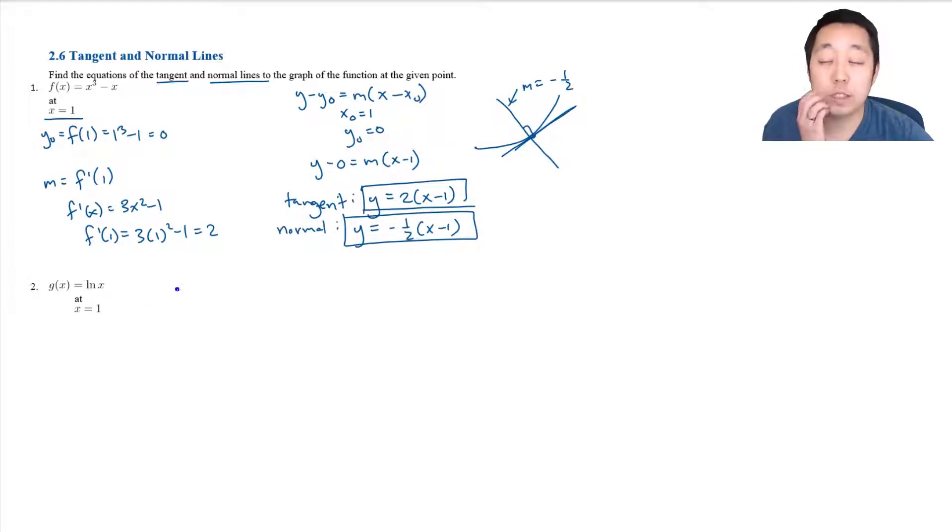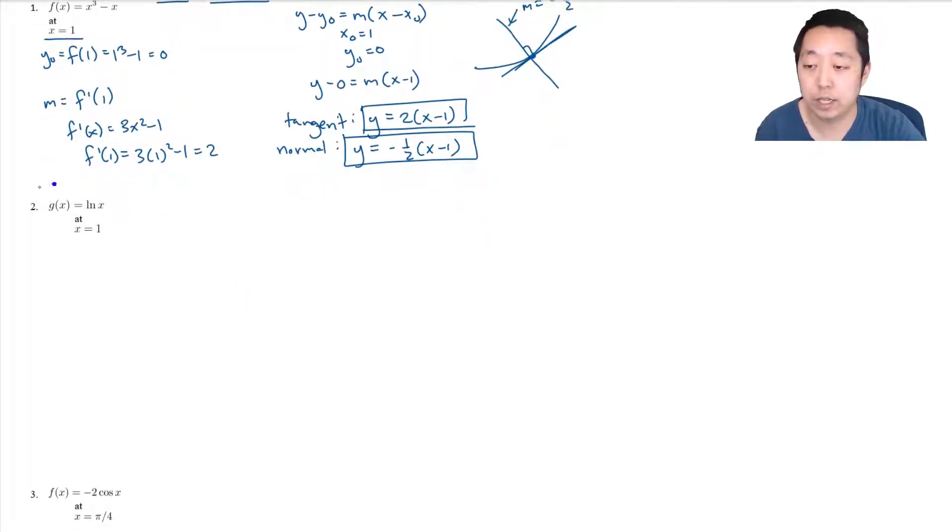We're going to do this for all tangent and normal lines. We're going to use slope point form, so we need the point, and then we're going to use the derivative to find the tangent line slope. Okay, here the point is 1, and the y value, so x naught is 1, y naught is ln of 1. Natural log of 1 is 0, so our point is (1, 0).